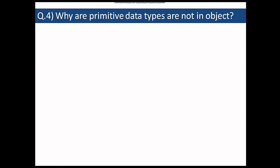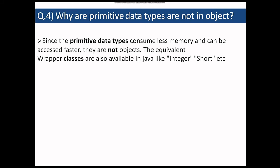The next question is why are primitive data types not object? So everything in Java is in classes and objects. So why are primitive data types not an object? So that is because primitive data types consume less memory and can be accessed faster. So they are not objects and they are used a lot. So creating a heap memory as objects do will be very costly. So that is why primitive data types are not object.